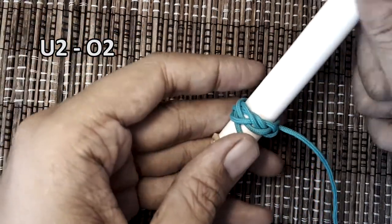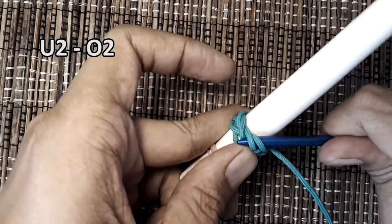And finally, under 2, over 2, splitting the final pair.